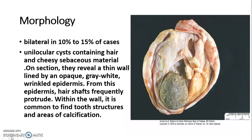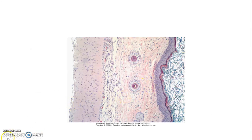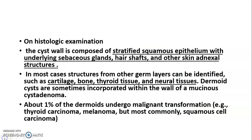Dermoid cysts are mostly unilocular cysts filled with paste-like pultaceous material, with structures such as tooth, cartilage, bone, and muscle. On microscopy, you see stratified squamous lining epithelium with adnexal structures along with cartilage, bone, thyroid tissue, and neural tissue. About 1% of dermoids undergo malignant transformation, most commonly squamous cell carcinoma, followed by thyroid carcinoma and melanoma.